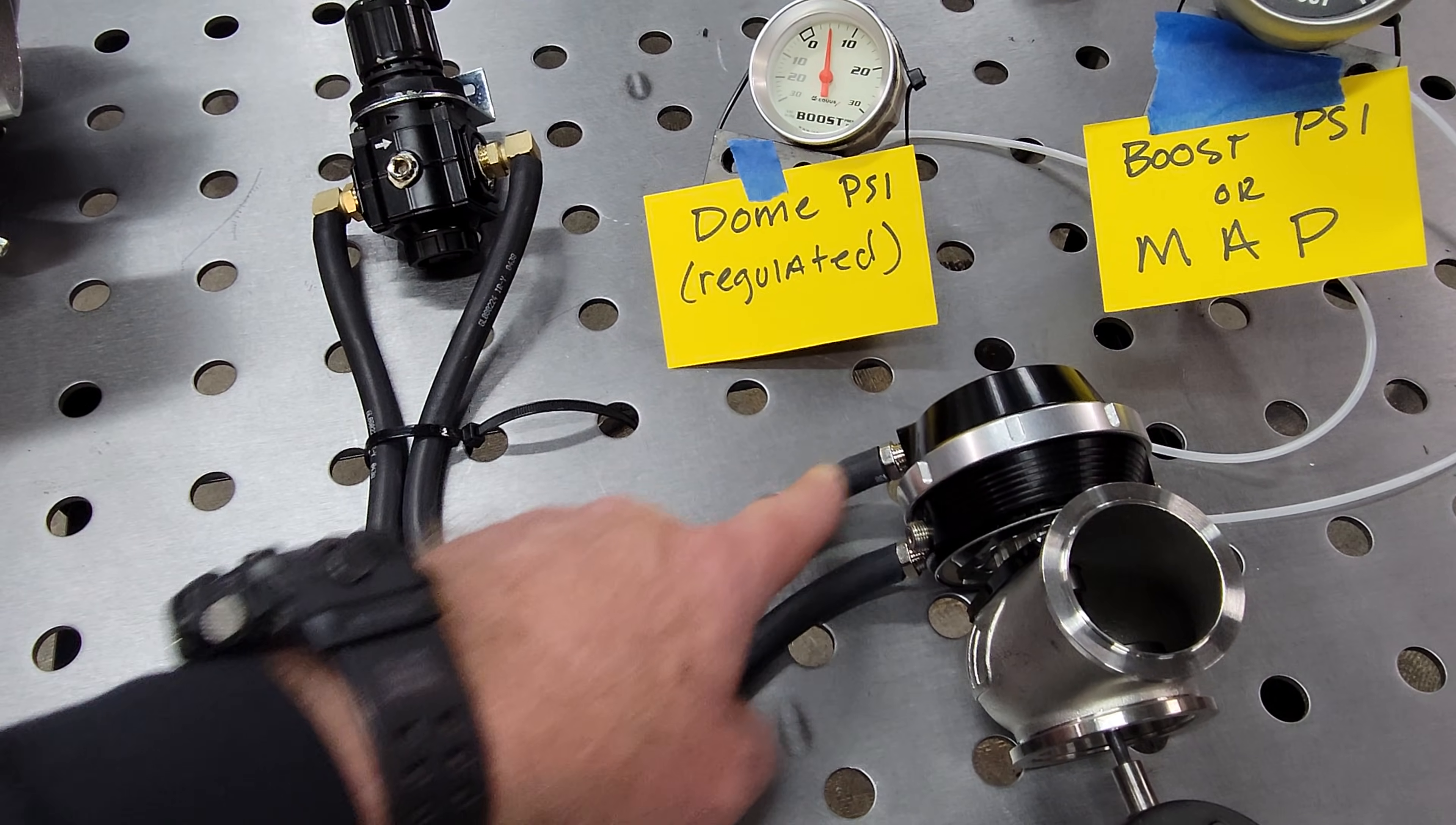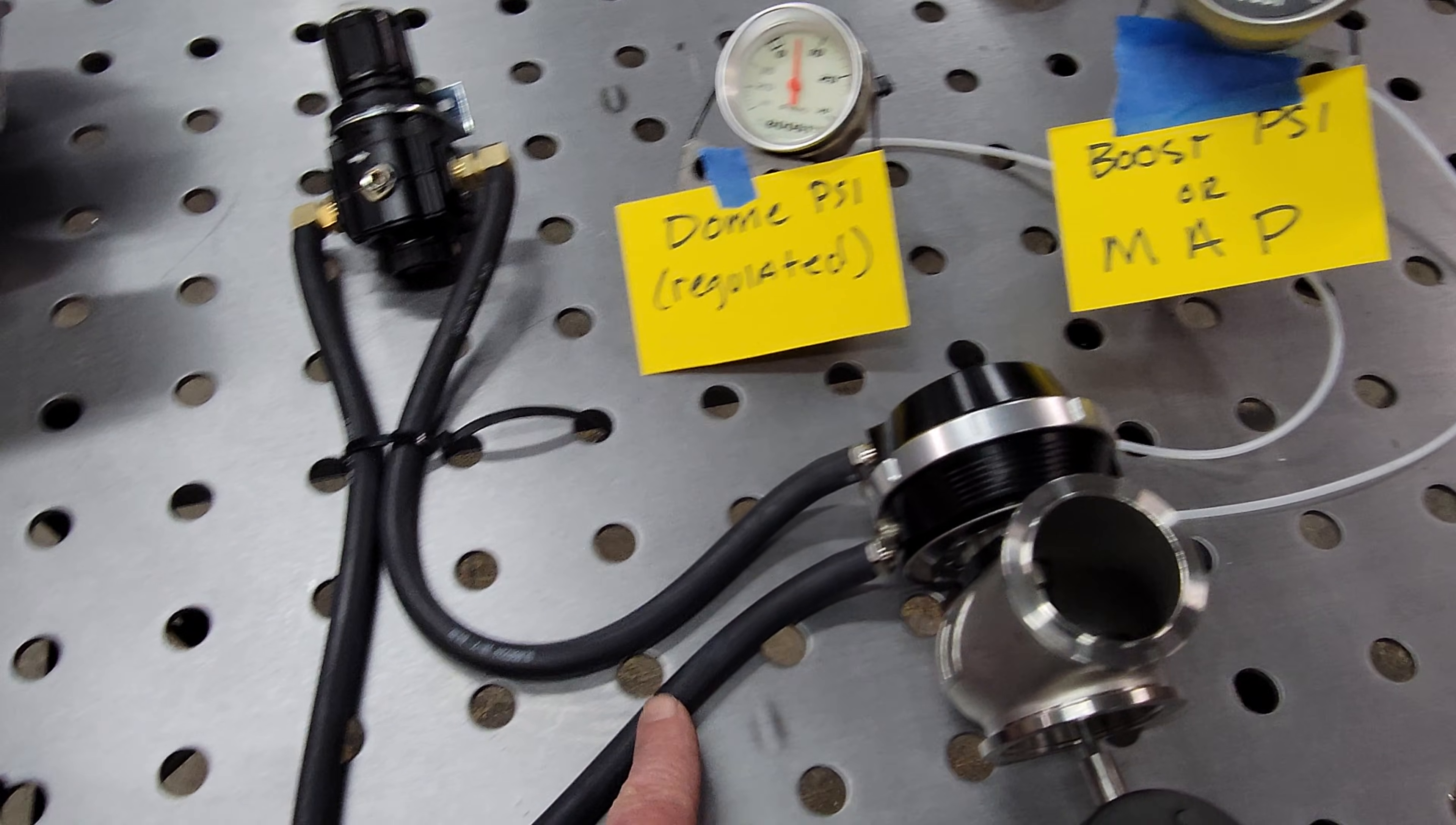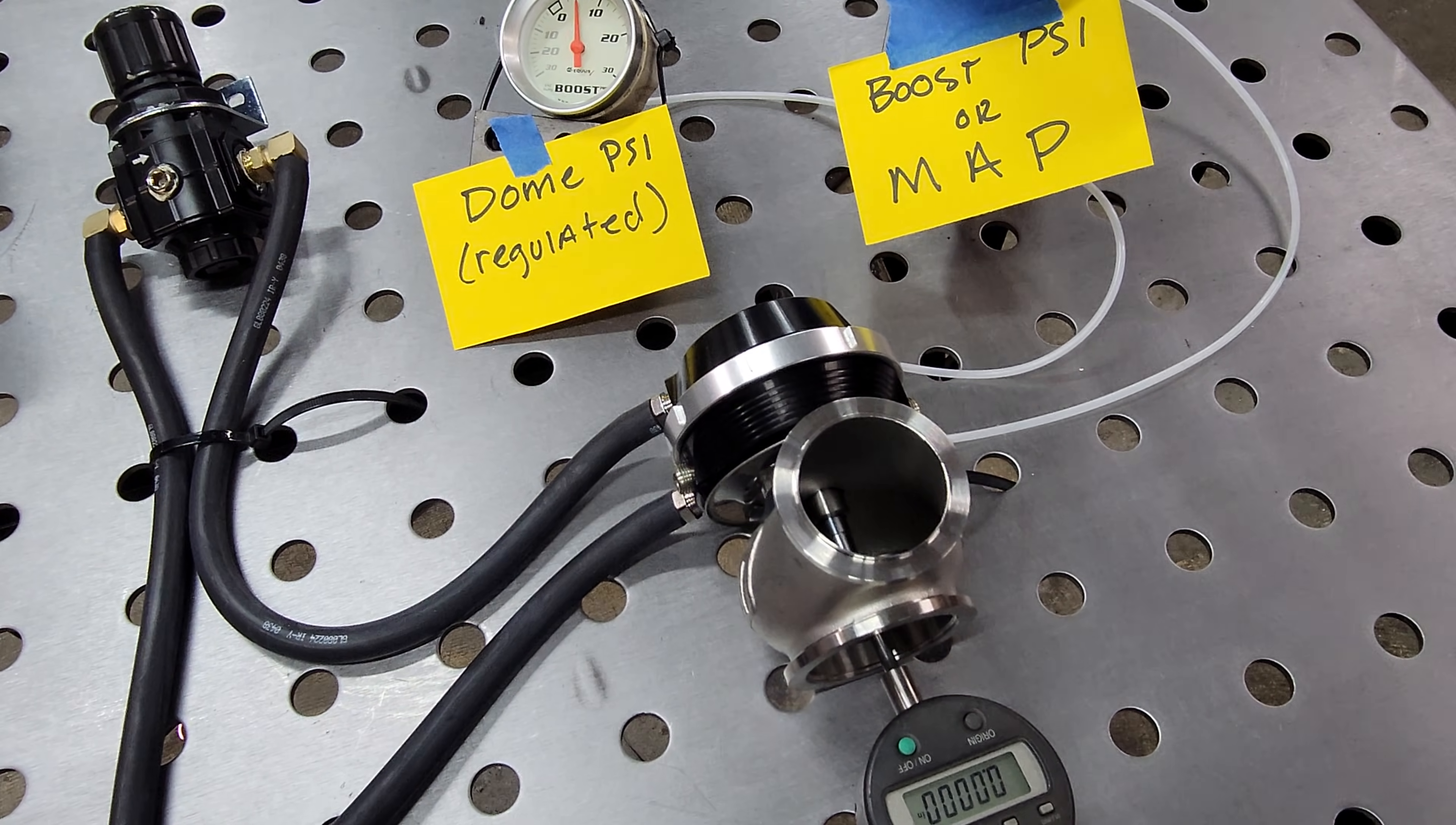So by doing that, it increases the effective spring rate inside the wastegate, therefore making it harder to open this valve. Think of this as an air spring on top. The more pressure you put on this, the harder it is to open, so the more pressure it is required from your manifold, so the turbo will continue to make boost until it can overtake the delta between the two.